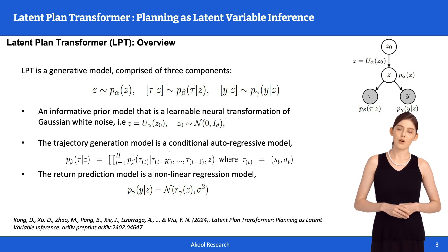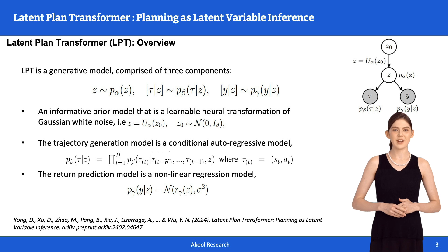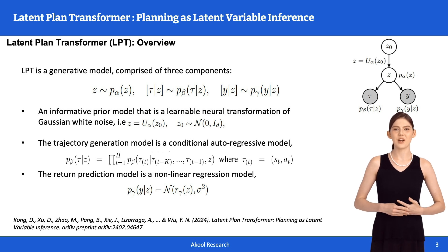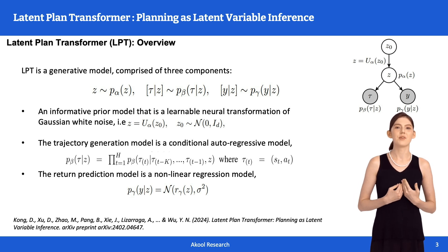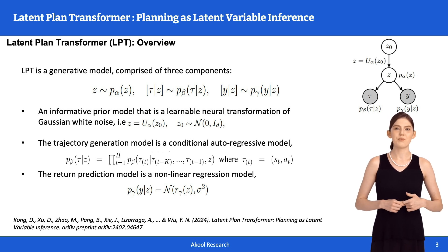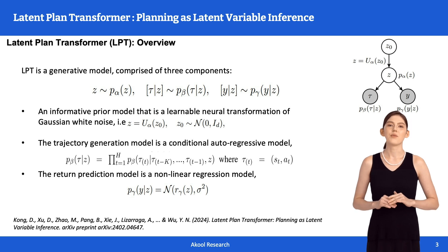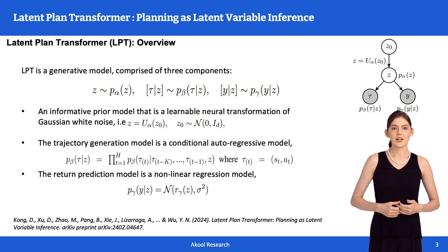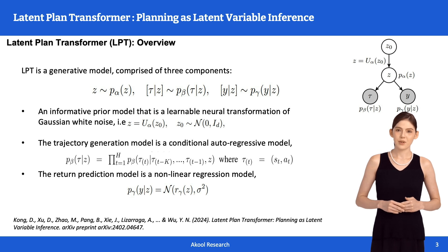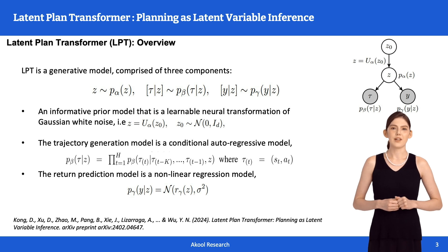Second, a trajectory generator model. This part of the model takes the transformed noise Z, now called the latent plan, and generates sequences of states and actions from it in an auto-regressive manner, just like the language modeling in GPT. You can think of this as the policy model that decides what actions to take. Third, a return predictor model. This component predicts the return or total reward based on the latent plan Z — essentially a nonlinear regression model that tells us how good the plan is. In summary, LPT uses these three components to plan effectively by leveraging latent variables, which help predict long-term outcomes better than traditional methods.